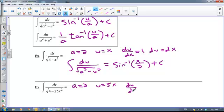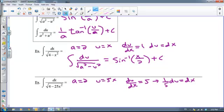So what is du dx? Well, du dx is 5. And I don't have a 5 up here, so I've got to rearrange this and say 1 5th du is equal to dx. So let's go through our substitution here.